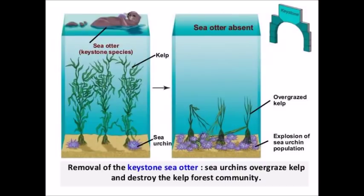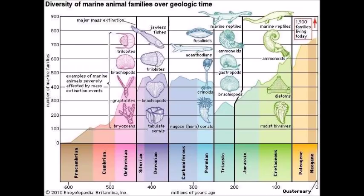An example of a keystone species is the otter, who hangs out in underwater kelp forests. Otters eat sea urchins, who in turn eat the holdfasts that keep kelp anchored. If the otters were removed, the urchins would be able to eat the holdfasts much more easily, hindering the growth of the kelp.